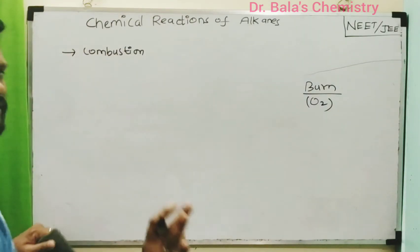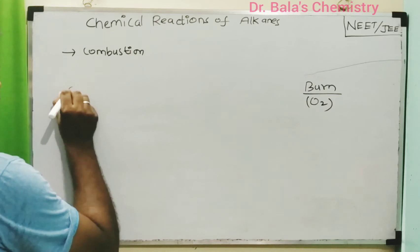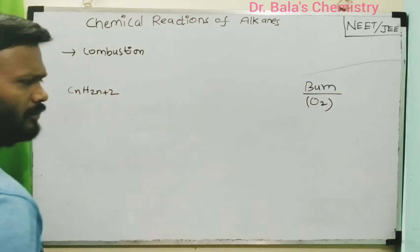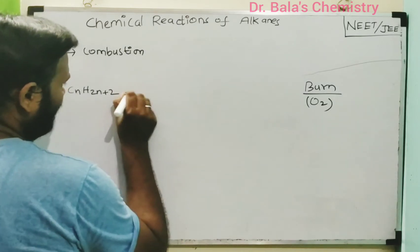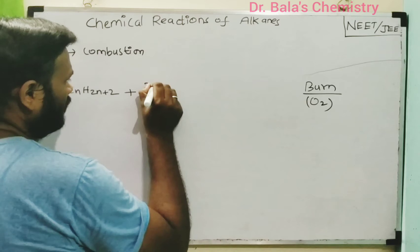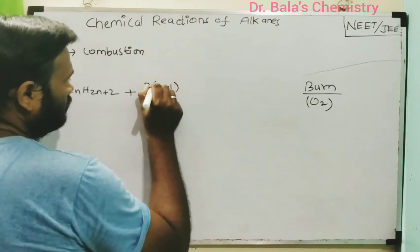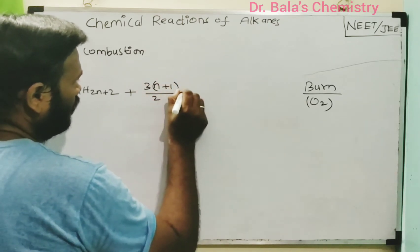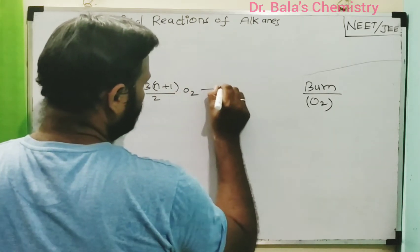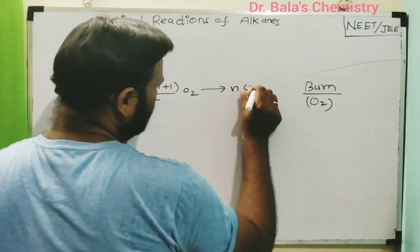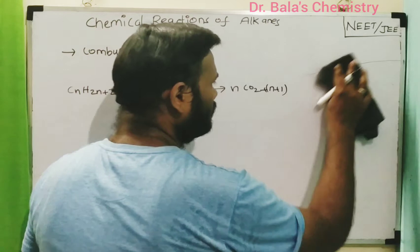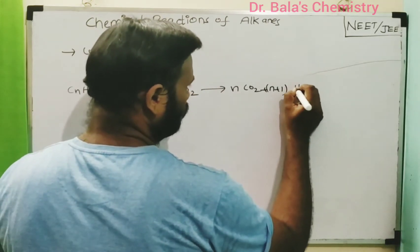Oxygen supply is very important. For alkanes, the general formula is CnH2n+2. If you want to burn alkanes, you have to supply (3n+1)/2 amount of oxygen. This will produce n amount of carbon dioxide and n+1 amount of water.